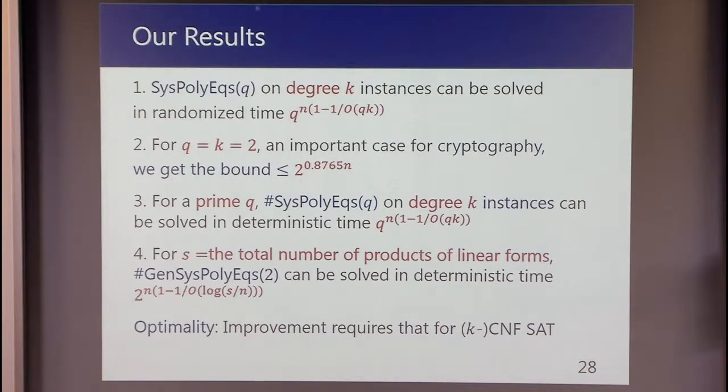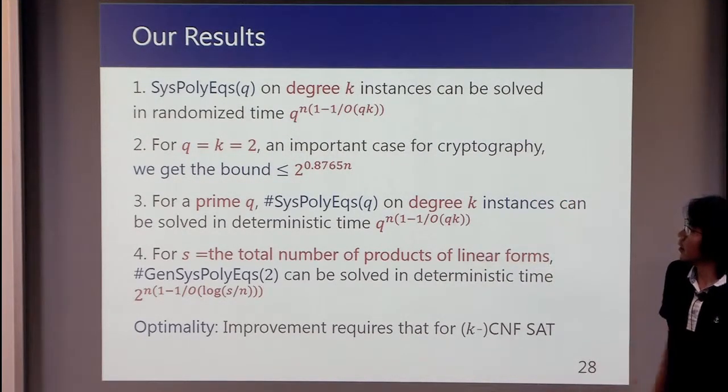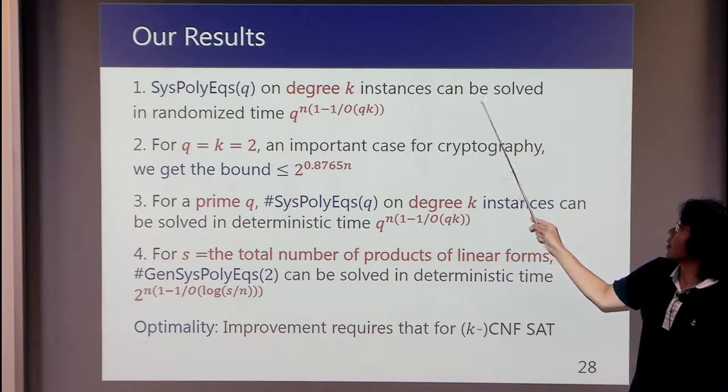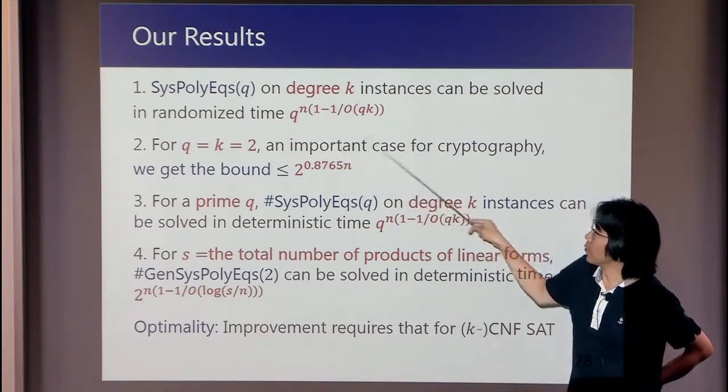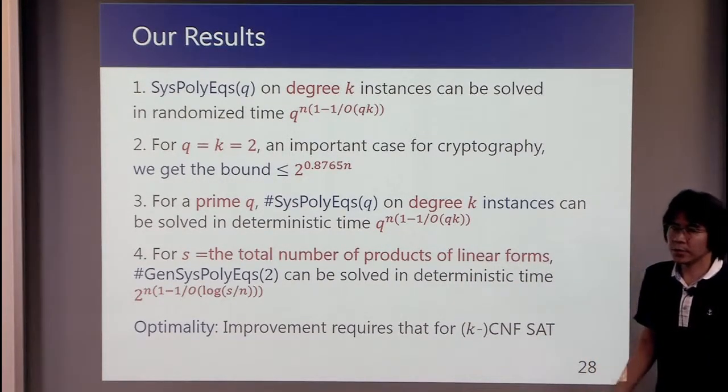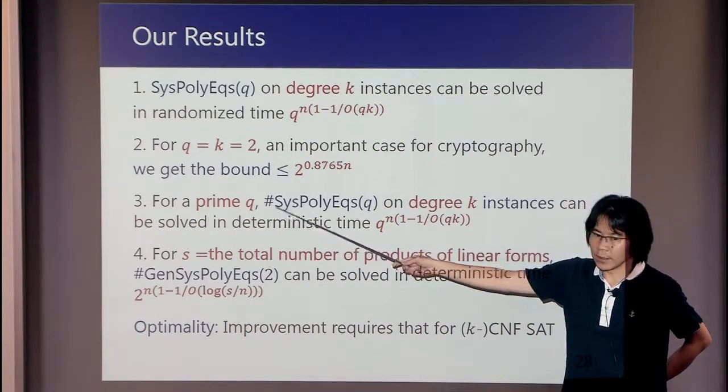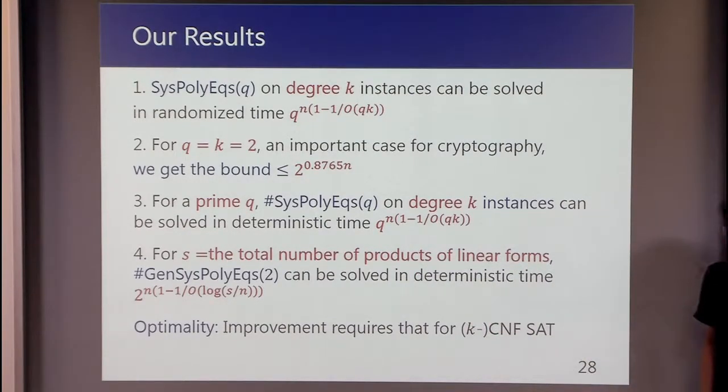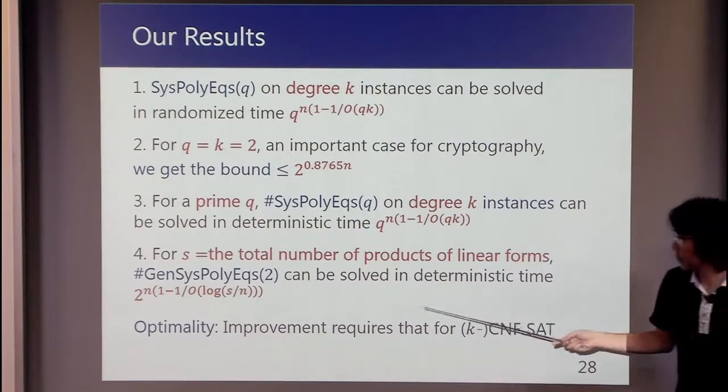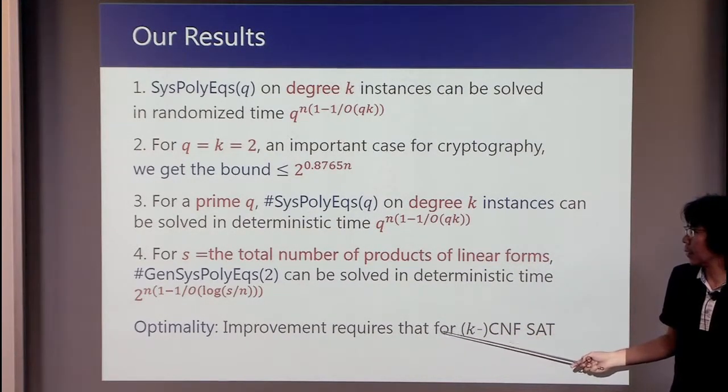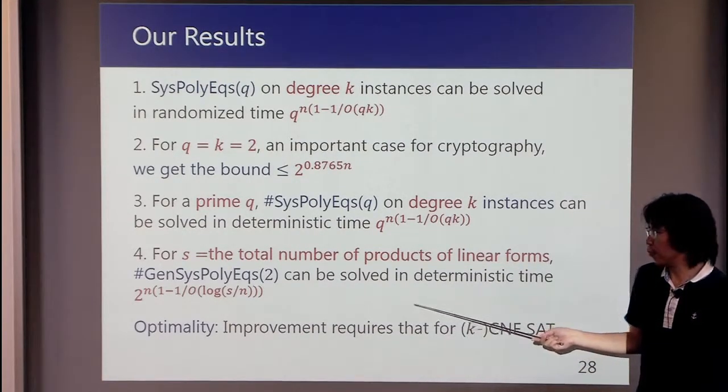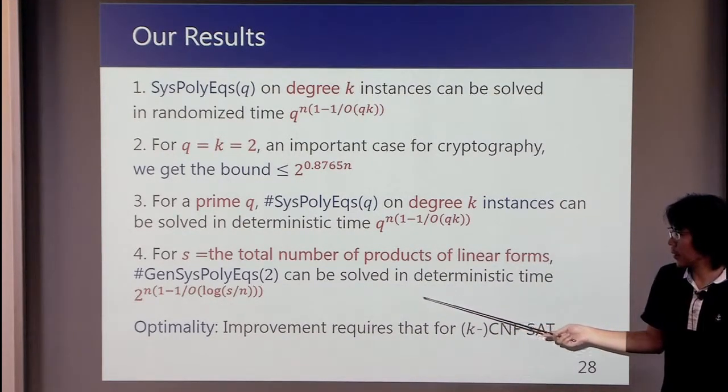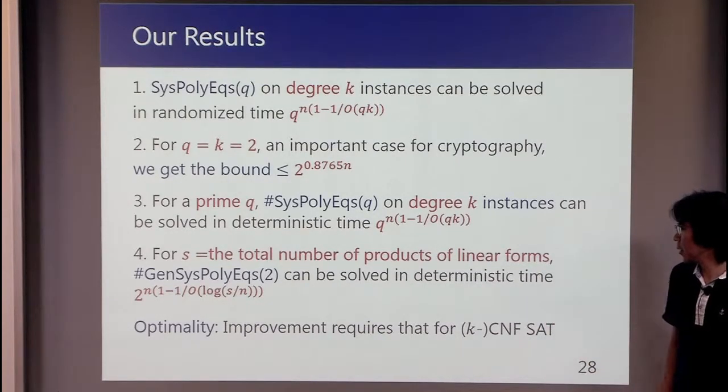Let me conclude. These are our results. First, we showed that SysPolyEqs(q) on degree k instances can be solved in randomized time of this form. If q is a prime number, we get a deterministic algorithm for the counting version of the problem. And if q is 2, then we can handle more general problems. So each polynomial has unbounded degree. And actually, each monomial is a product of linear forms.